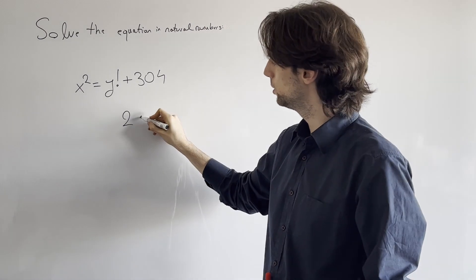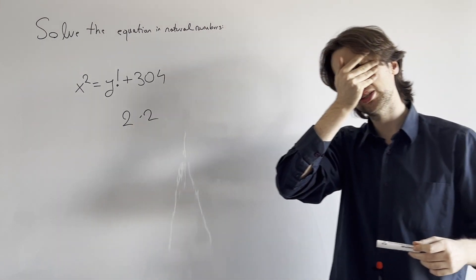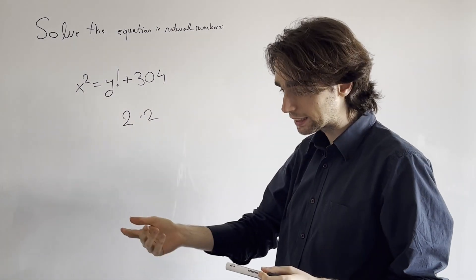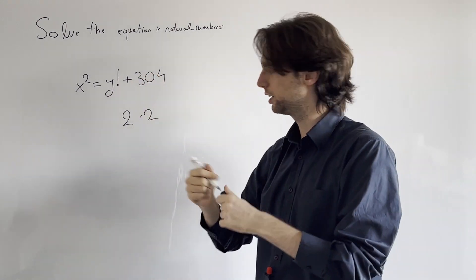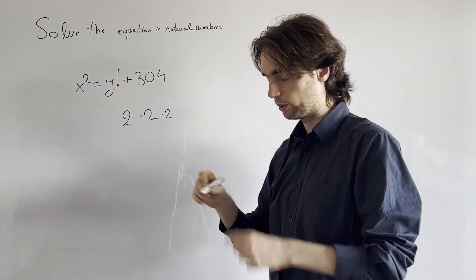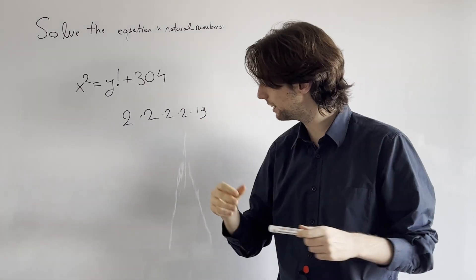Again, divide by 2, that's times 2 again. 152 divided by 2 is 76. We can divide by 2 again, and we get 38. And then we divide by 2 again, boom, and we get 19. So this is 16 times 19.